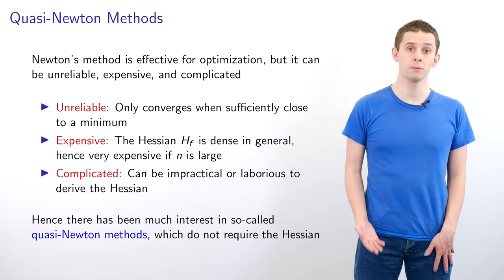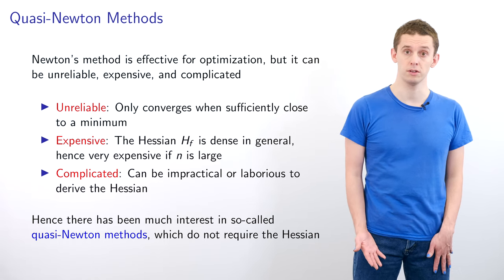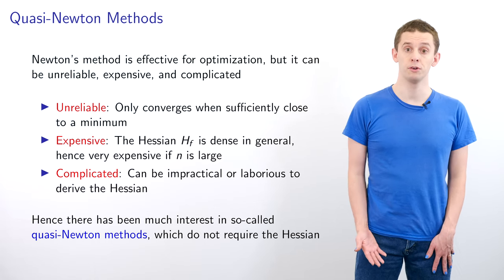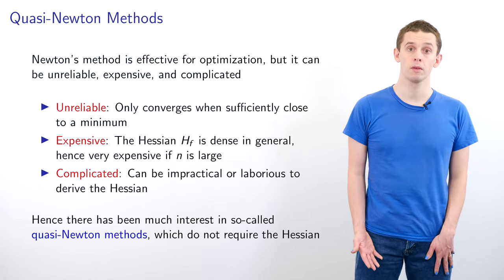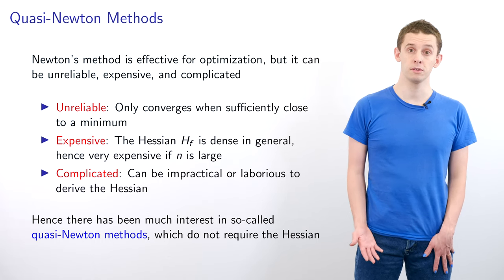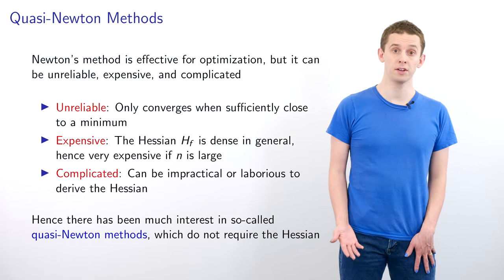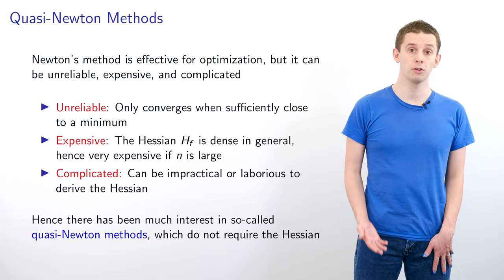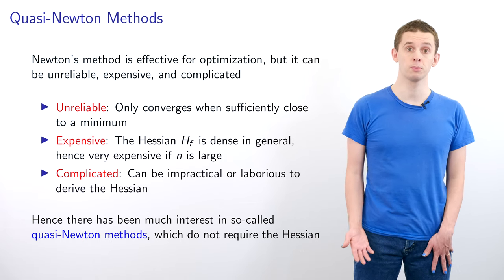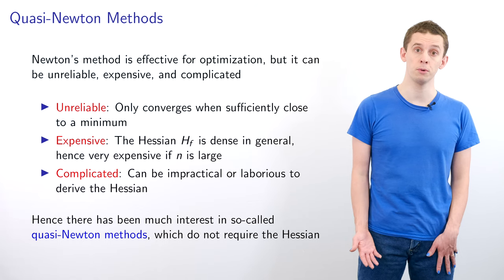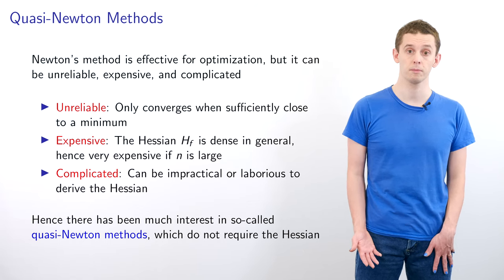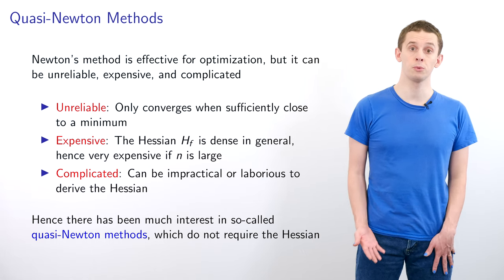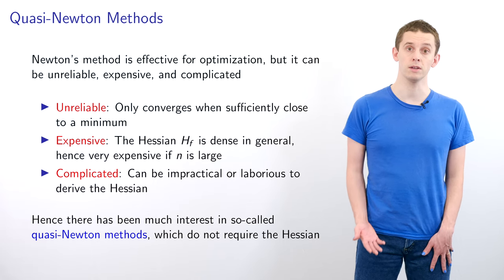Newton's method can be highly effective for optimization in some cases, but it has some drawbacks. It can be unreliable and can only converge when we're sufficiently close to a minimum. It can be expensive because the Hessian can be dense in general and will be very expensive to compute if n is large, since we have n squared terms. It can also be complicated because for certain problems it can be impractical or laborious to calculate the Hessian explicitly. Because of this, there's much interest in quasi-Newton methods that don't require the Hessian, and we'll take a look at these in the next video.